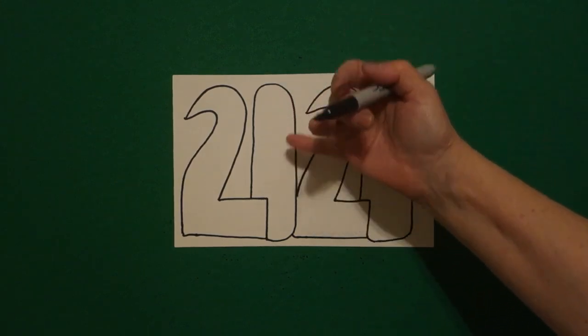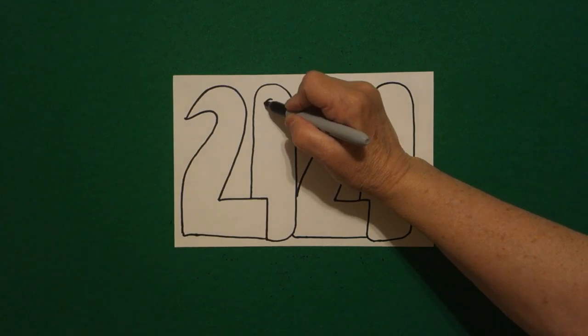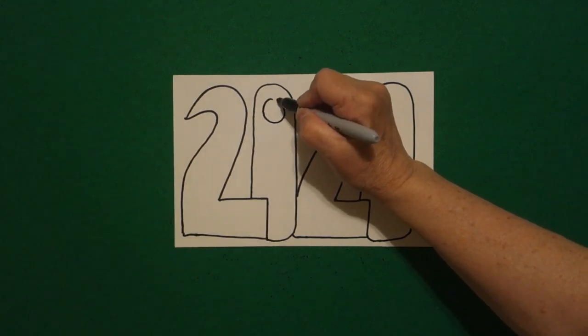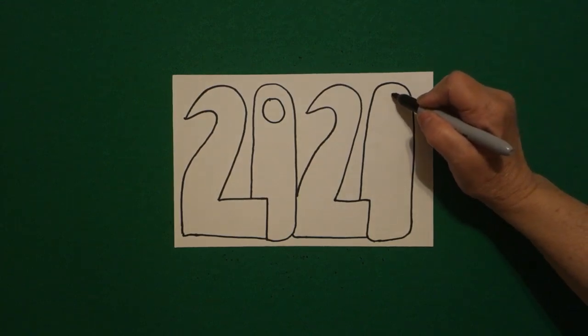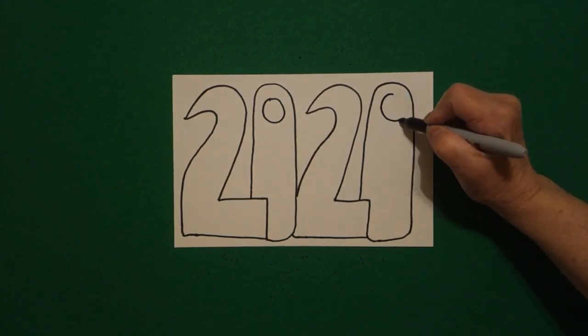I come to this first space, and right at the top, I'm just going to draw a pretty good size circle. Come to the last space, I'm going to put a pretty good size circle.